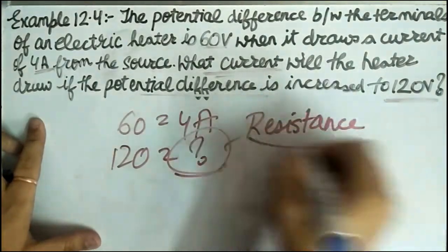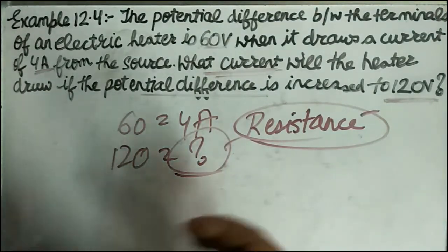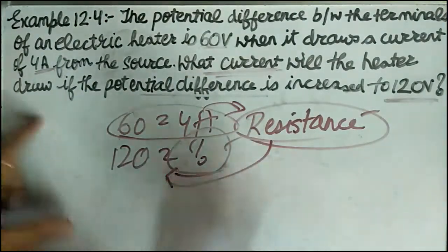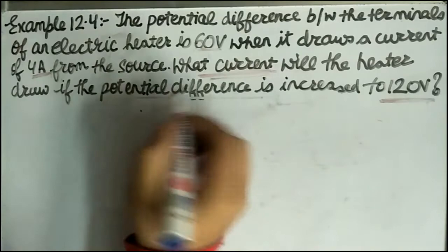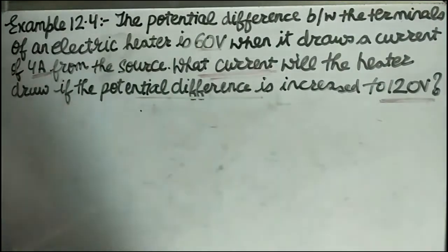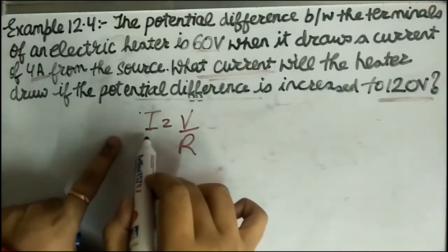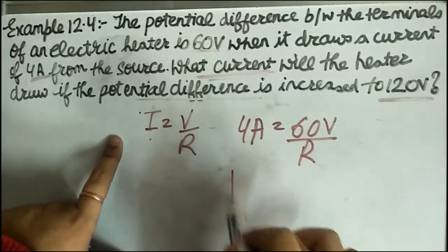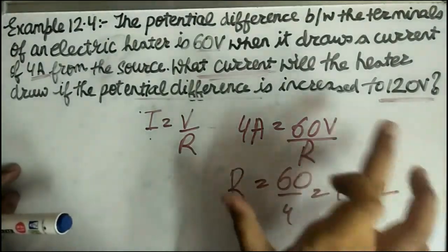Resistance is constant - it does not change. Potential difference can change and current can change, but resistance stays the same. So we find resistance from the first case using I = V / R, which gives R = V / I = 60 / 4 = 15 ohm.